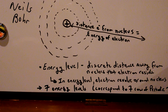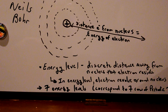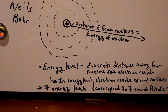Up until this point, we have Thompson, who gave us the electron, and Rutherford, who gave us the structure — which means there's a nucleus, and outside the nucleus are electrons. And what Niels Bohr did is he gave a more correct explanation of what's happening to the electrons.